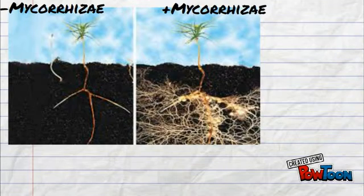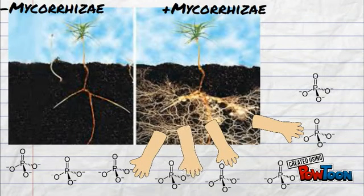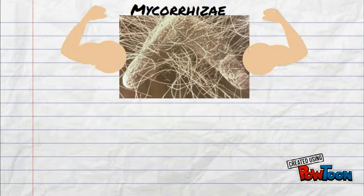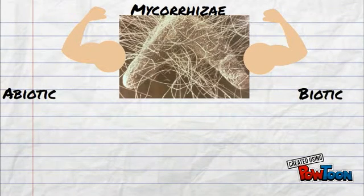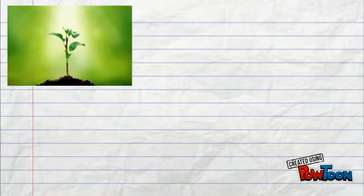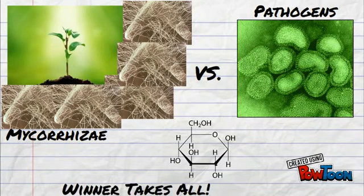Mycorrhizae primarily help plants improve their acquisition of nutrients, especially nutrients that aren't very mobile in soil, like phosphorus. Mycorrhizae also help plants develop a higher resistance to both abiotic and biotic stresses, like droughts and infection. By competing with pathogens in the soil for the plant's carbohydrates, the mycorrhizae can effectively defend the plant from infection.